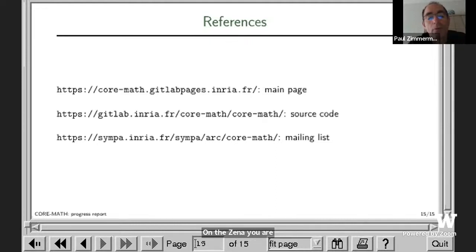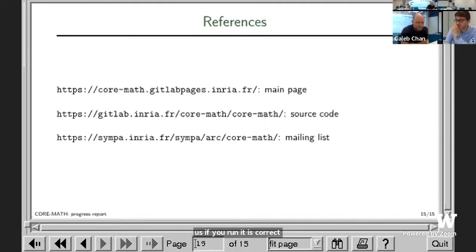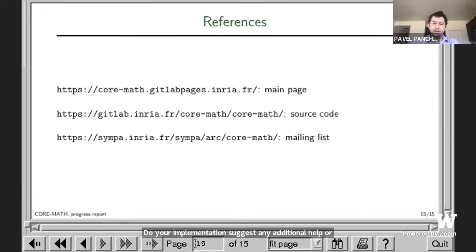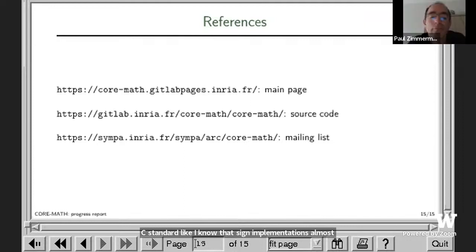Got it. Do your implementations suggest any additional helper functions that would be useful to include in a later C standard? Like I know that sine implementations almost always come with an accurate mod pi operation, but those typically aren't exposed to users. Some functions which are very useful are, for example, the FastTwoSum, which takes two double precision numbers or two floating points in some given format with some ordering in the inputs, and outputs two floating point numbers whose sum is exactly the same but with some other ordering. This is a very useful routine, and it would be nice if it would be available in hardware.